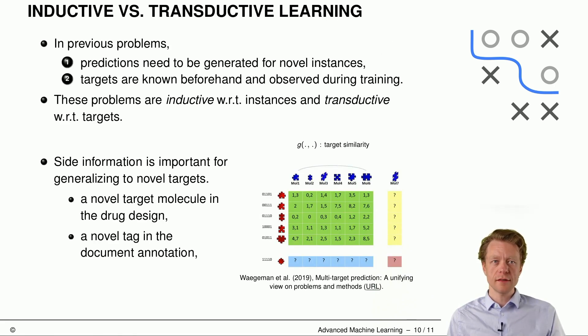Now, let's speak about inductive versus transductive learning. So in previous problems or usual supervised learning, predictions need to be generated for novel instances, of course. So we have a training data set, and then we have some new unseen test observations at prediction time where we want to predict the target. And the targets are known before and observed during the training. These problems are inductive with respect to instances, because at prediction time we're looking at totally new instances, and transductive with respect to targets, because we already know the possible set of targets.